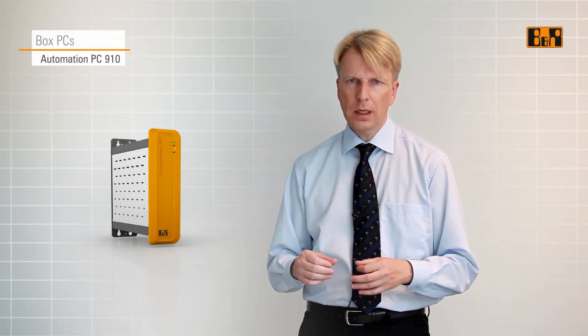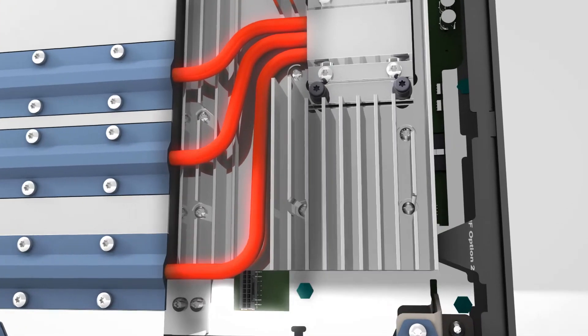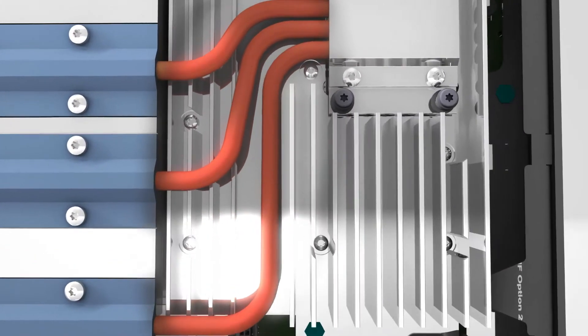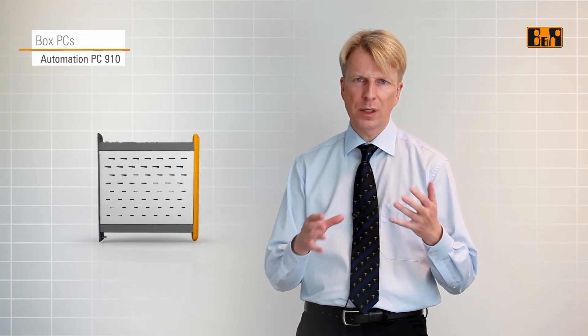The heat sink has also been completely redeveloped to optimize heat dissipation. Because the processor dies are getting smaller and smaller, we now work with heat pipes to distribute the heat more effectively. We have also optimized air flow for systems that use fans.